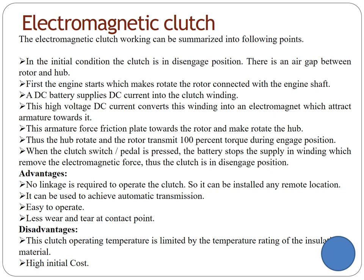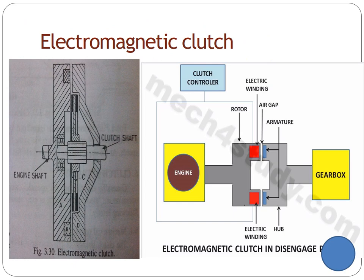Electromagnetic clutch: works due to electric charges or magnetic forces. Initially the clutch is in the disengaged position with an air gap between the rotor and armature. The engine starts and rotates the rotor connected to the engine shaft. A DC battery supplies DC current into the clutch winding, converting it into an electromagnet which attracts the armature toward it. The armature forces the friction plate toward the rotor and makes the hub rotate to transmit power. This electromagnetic action reduces the air gap and enables power transmission from engine to gearbox.